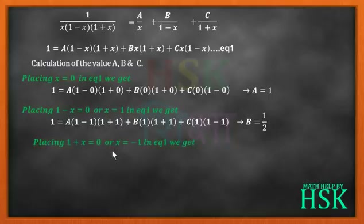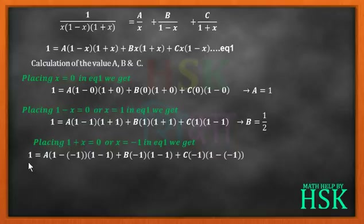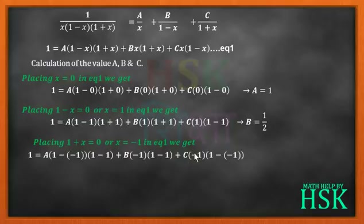Similarly, placing 1 plus x equal to 0, or x equal to minus 1, in equation number one: 1 equals A times 1 minus minus 1 into 1 plus minus 1, which is 0, plus B times minus 1 into 1 minus 1, which is 0, plus C times minus 1 into 2, giving minus 2C equals 1, so C equals minus 1 upon 2.